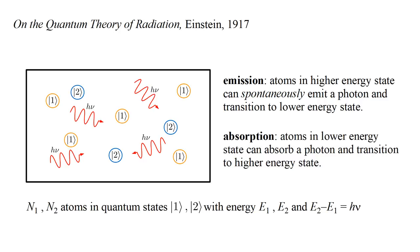Another possibility is absorption. An atom in the lower energy state can absorb a photon and transition to the higher energy state. This will decrease N-one and increase N-two.